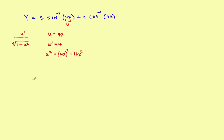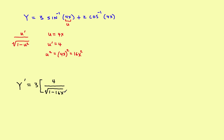Now we plug those values into the formula. The derivative starts with the constant 3, then times the derivative of inverse sine. We put a line across: u prime on top is 4, and the denominator is the square root of 1 minus u squared, which is 1 minus 16x squared. So there's the derivative of the first part.